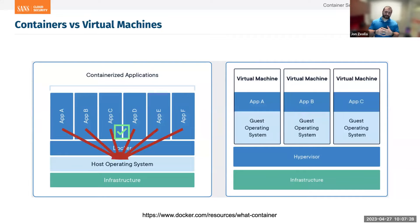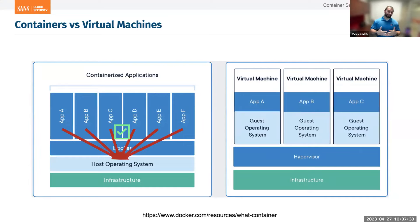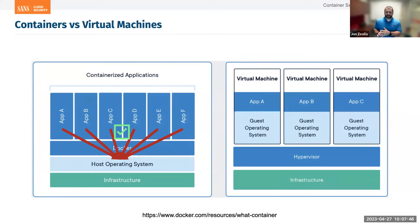In the VM world, each application talks to its own guest operating system, and application A is not able to talk to application B's operating system even though they're in the same hypervisor. That restriction does not exist in containerization — we've got multiple applications deployed on one system, one operating system, and all of them can talk to the same exact operating system. That sounds a little scary, but there are some controls protecting us.